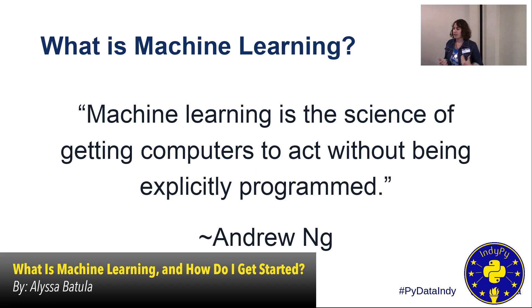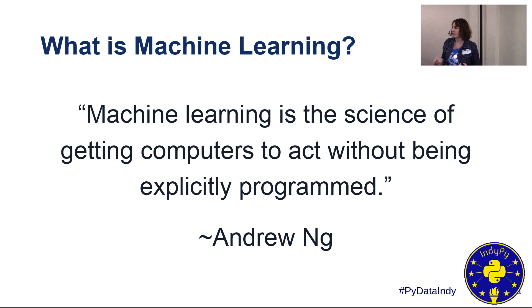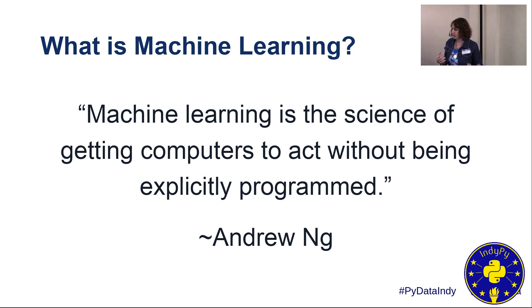A good first step is: what is machine learning, and how is it different from what I was doing before? I like this definition: it's the science of getting computers to act without being explicitly programmed. In traditional programming, you're telling the computer what to do line by line. With machine learning, we're teaching it to make decisions or take actions without programming each of those individual steps or telling it, in this particular scenario, you need to do this thing.